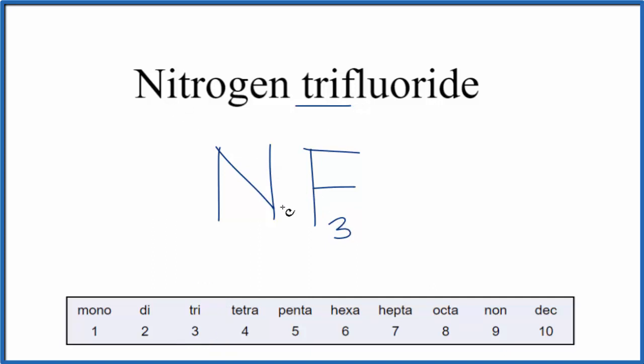Note that we do only have one nitrogen, but when we have the first element, like nitrogen, and we only have one of them, we don't write mono for that. Mono only goes with the second element in molecular formulas.